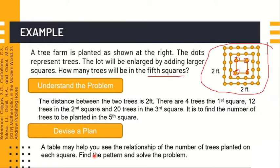By applying the Polya four-step method, Step 1 — understand the problem: the distance between two trees is two feet. There are 4 trees in the first square, 12 trees in the second square, and 20 trees in the third square. We need to find the number of trees in the fifth square. Step 2 — devise a plan: a table may help you see the relationship of the number of trees planted in each square. Find the pattern and solve the problem.